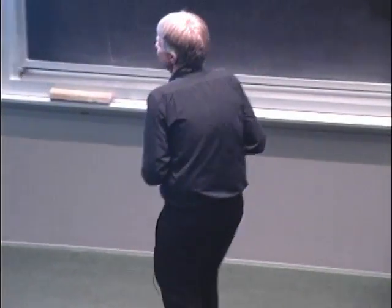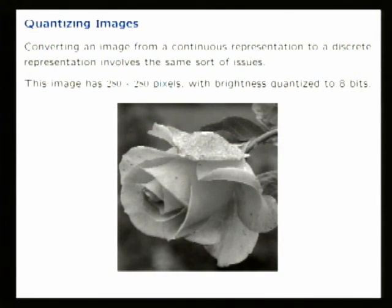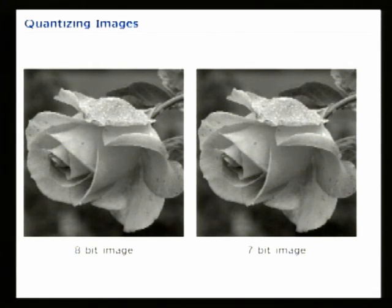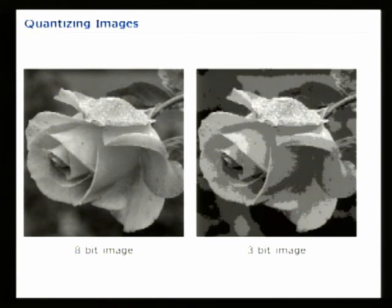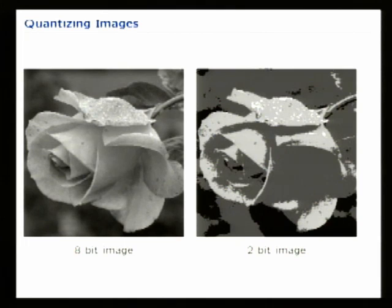The same sort of thing happens for pictures. Here's a relatively high-quality picture at 280 by 280 pixels with an 8-bit amplitude representation. The kinds of things that happen when you quantize a picture are very similar to what happens when you quantize audio. Comparing the picture quantized at 8 bits versus 7 bits, 6, 5, 4, 3, 2, and 1 bit, you can see the progression.